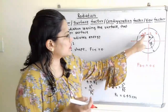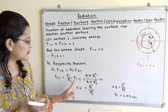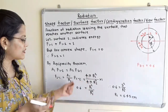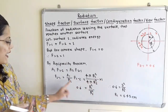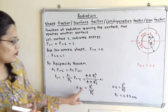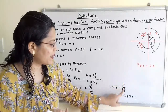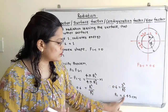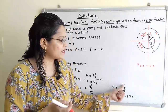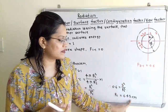The surface area of a sphere is 4πR², so A1 = 4πR1² and A2 = 4πR2². The 4π terms cancel, giving F(2→1) = R1² / R2². Substituting F(2→1) = 0.6 and R1 = 5 cm: 0.6 = 25 / R2², so R2² = 25 / 0.6, giving R2 = 6.45 cm. The answer is in centimetres because R1 was given in centimetres.